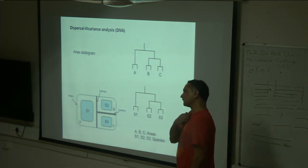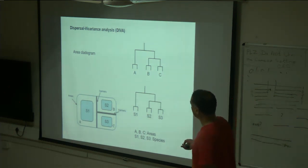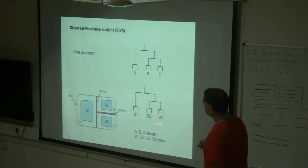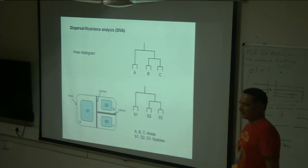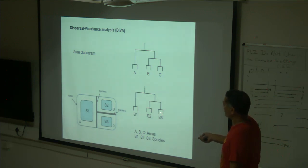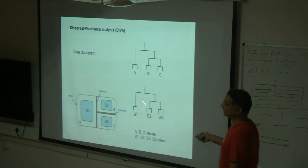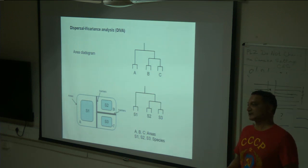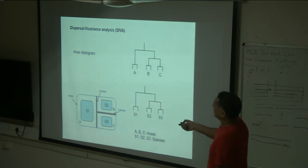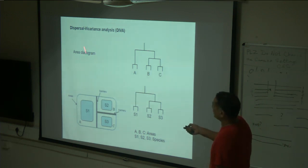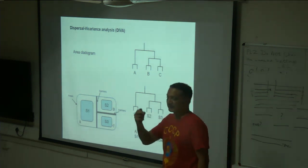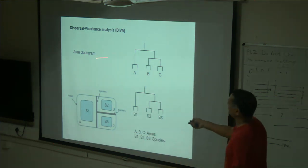Another way to distinguish dispersal from vicariance is to look at what are called area cladograms. It doesn't completely solve the problem, but gives you more clarity. If you bring in the time component, it becomes much better. What's an area cladogram? You replace the species names with areas — this shows how these areas are, in a way, related to each other.